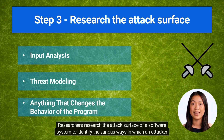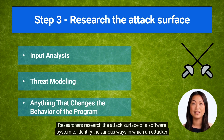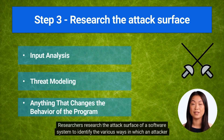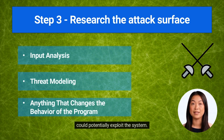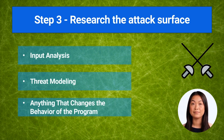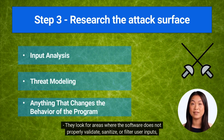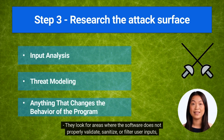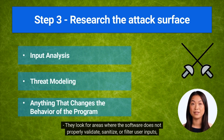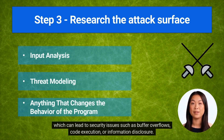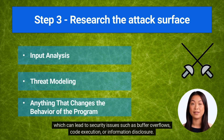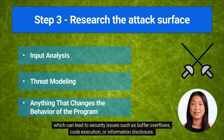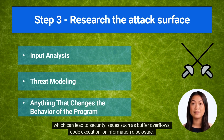Researchers research the attack surface of a software system to identify the various ways in which an attacker could potentially exploit the system. They look for areas where the software does not properly validate, sanitize, or filter user inputs, which can lead to security issues such as buffer overflows, code execution, or information disclosure.